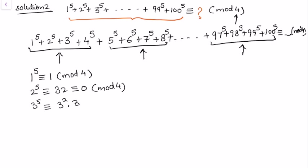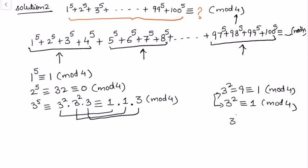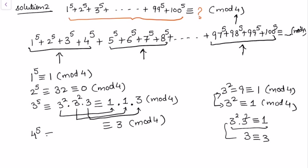Let's solve the first block. 1 to the power 5 is 1, congruent to 1 modulo 4. 2 to the power 5 is 32, congruent to 0 modulo 4 since 32 is divisible by 4. For 3 to the power 5, we write it as 3 squared times 3 squared times 3; since 3 squared is 9 and 9 is congruent to 1 modulo 4, we get 3 to the power 5 congruent to 3 modulo 4. For 4 to the power 5, it is a power of 4 multiplied five times, so this is congruent to 0 modulo 4.